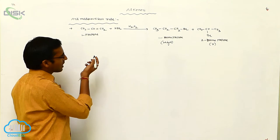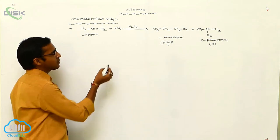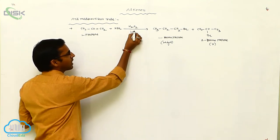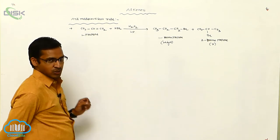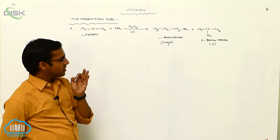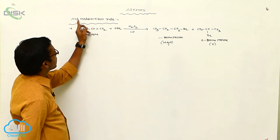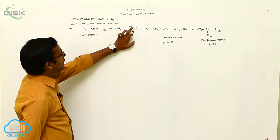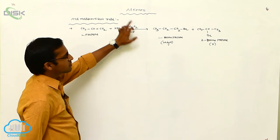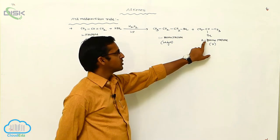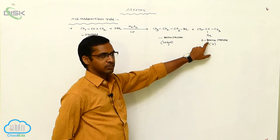If you see the mechanism, hydrogen peroxide under photochemical conditions produces radicals. Due to the presence of hydrogen peroxide, the reaction proceeds via the Anti-Markovnikov rule. If hydrogen peroxide is absent, the Markovnikov product is favored, which is why 2-Bromopropane becomes the major product in that case.